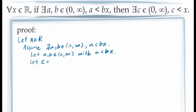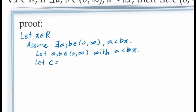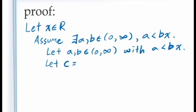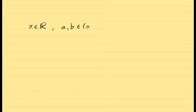Existential generalization can be one of the hardest principles of logic to use, because it involves a little bit of creativity. We have to figure out exactly what value to assign to c that is going to make our demonstration work. To figure out what value we should assign to c, let's get out a piece of scrap paper. From our assumption, we know that we have unknown real numbers a and b satisfying the inequality a is less than b times x. We also know that whatever these unknown values are, they're in the interval from 0 to infinity, which means they're both greater than 0.